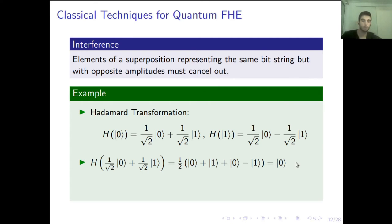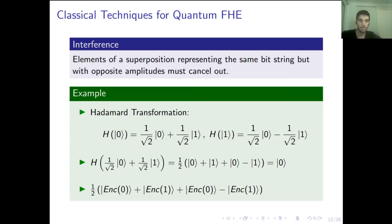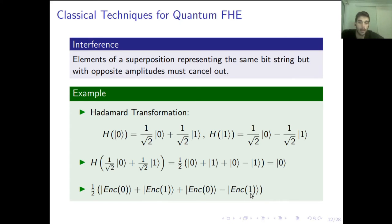What happens if we add encryptions and use classical methods? The result would look something like this. But in classical encryptions we have probabilistic encryptions, which means each bit can have many different encryptions. So this ket of encryption-of-one and this other ket of encryption-of-one are not the same. Thus they cannot cancel each other, so interference will not work. That's why we cannot just use classical techniques.